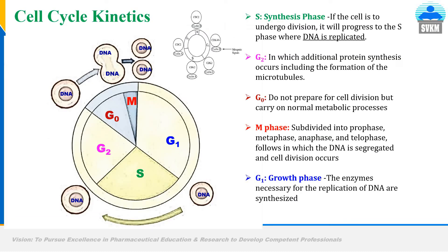Let's try to understand cell cycle kinetics. A cell undergoes cell division and cell proliferation by going through four different phases. The cell cycle starts with the S phase, that is the synthesis phase. In this first phase of cell division and cell proliferation, the DNA is replicated — in the synthesis phase, replication of DNA takes place.